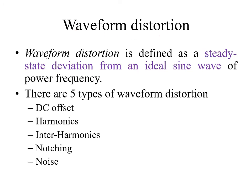Waveform distortion refers to any unwanted changes in the sine wave. It is defined as a steady-state deviation from the ideal sine wave. There are five types of waveform distortion: DC offset, harmonics, interharmonics, notching, and noise.